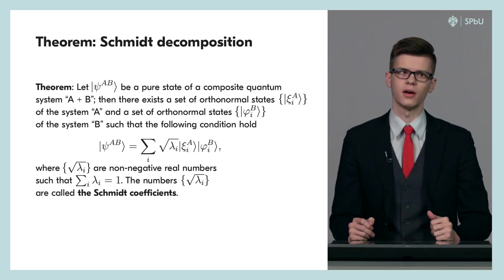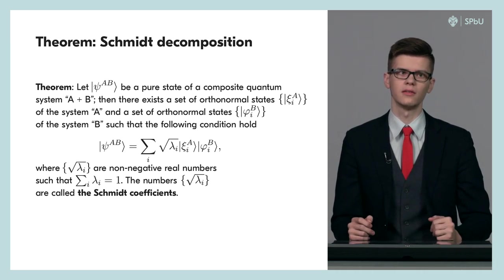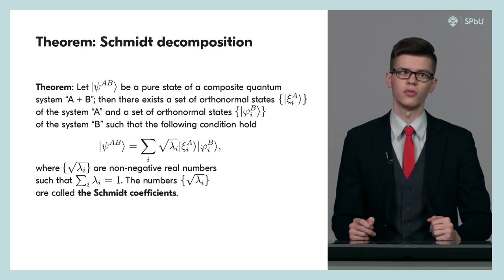Any term in this sum has a non-negative real coefficient, i.e. the square root of lambda sub i is a non-negative real number. These coefficients are also called Schmidt coefficients and obey the following condition: the sum over all lambda i is unit. Let us now prove this theorem.